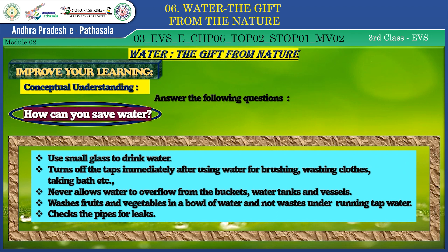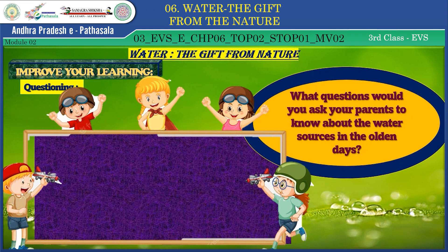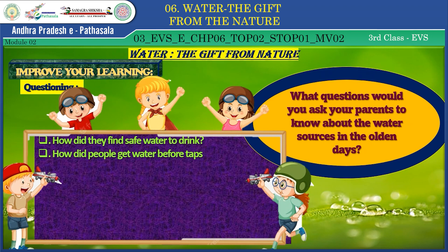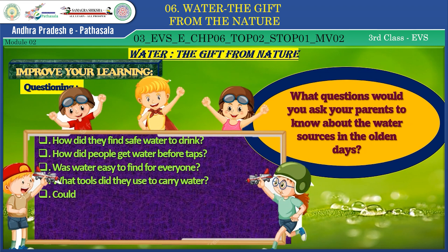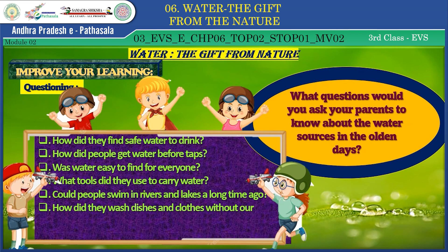Tell me what questions you would ask your parents to know about water sources in the olden days. How did people get water before taps? How did they find safe water to drink? Was water easy to find for everyone? What tools did they use to carry water? Could people swim in rivers and lakes long ago? How did they wash dishes and clothes without sinks? Did they use water for cooking and cleaning like we do? Any cool stories about water from the old days?